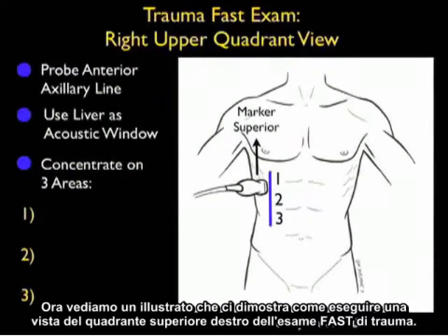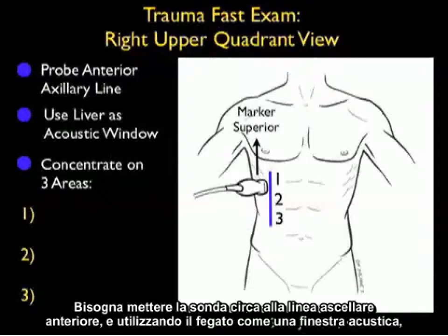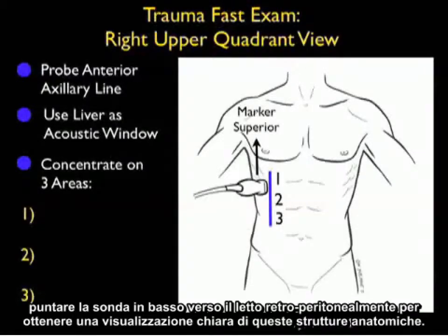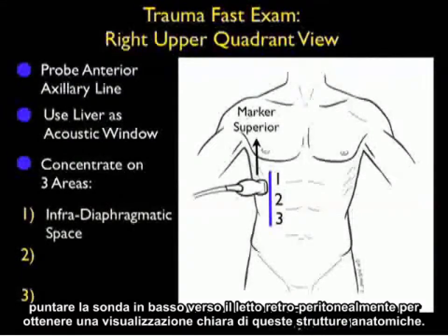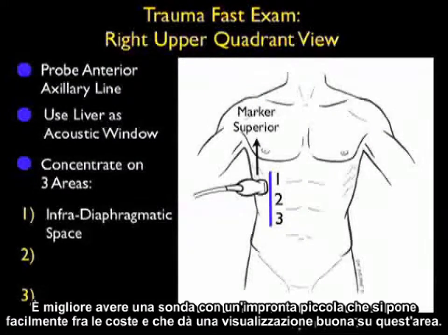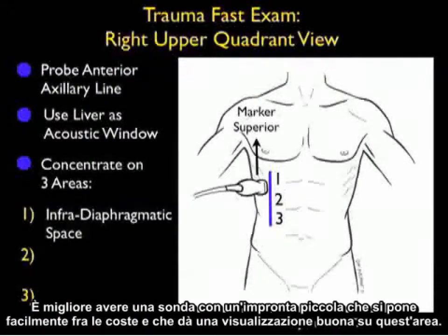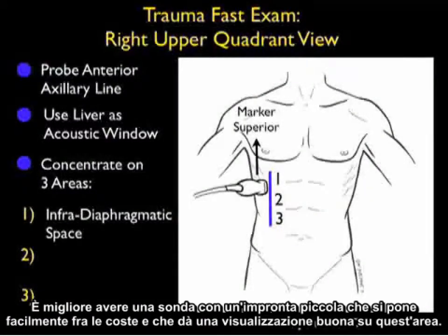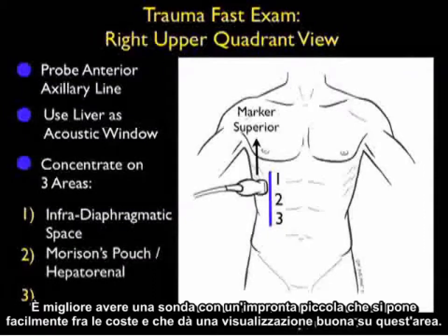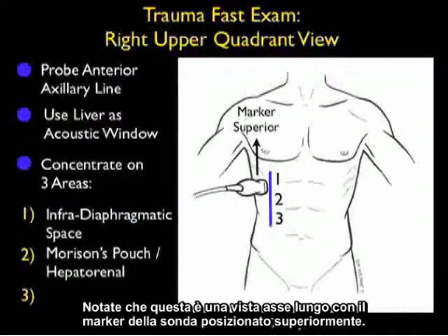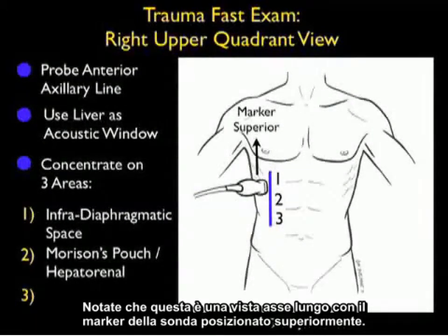Now let's take a look at a slide showing us how to perform the right upper quadrant view of the trauma fast exam. We'll want to place the probe at about the anterior axillary line, and using the liver as an acoustic window, aiming the probe down towards the bedside retroperitoneally to get a good view of these anatomical structures. It's best to have a small footprint probe that can easily sit between the ribs, giving a good view onto this area. Notice that this is a long axis view with a probe marker positioned superiorly.